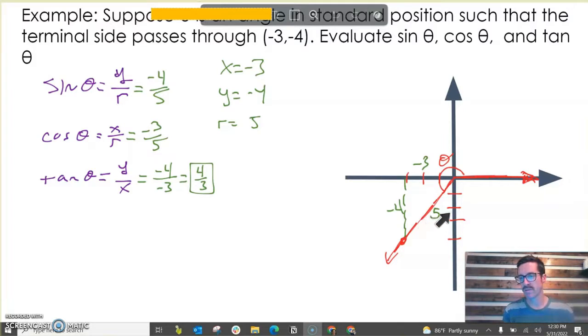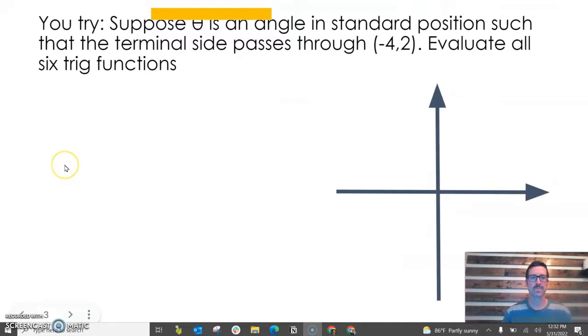Often with these problems, our radius isn't such a nice integer value. It'll have a radical in it. So let's investigate that. Maybe pause this and try it on your own if you think you know what's going on, then hit play whenever you're ready.